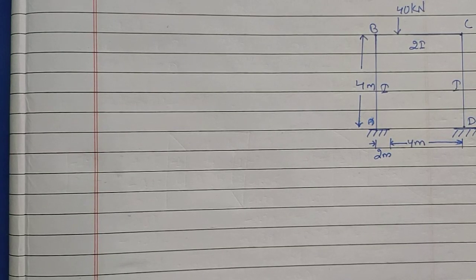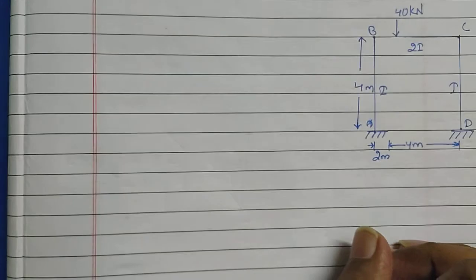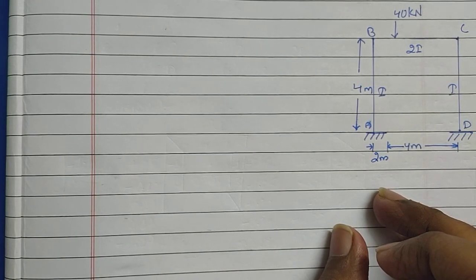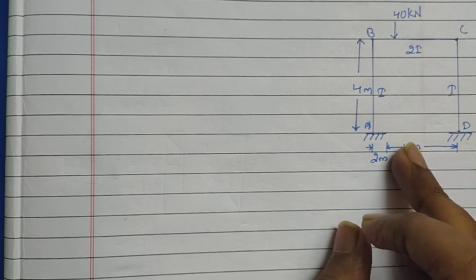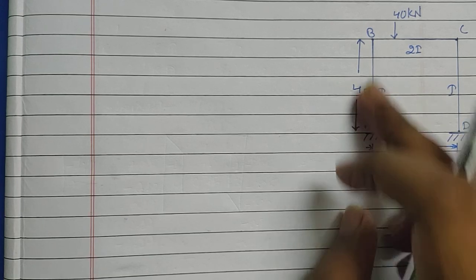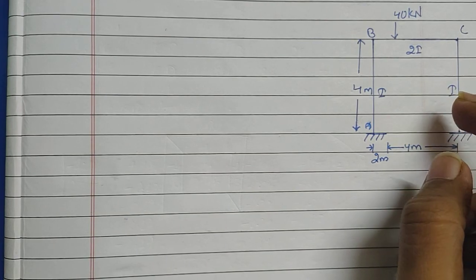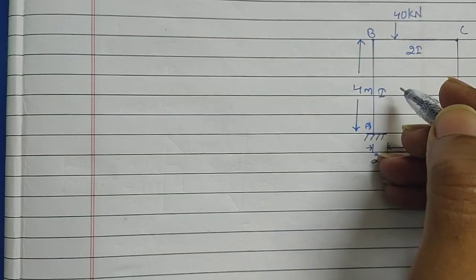Hello everyone, welcome to my YouTube channel Civil Learning. Today in this video I am going to discuss Kani's method, also known as the rotation contribution method. This is going to be the second type of question — a portal frame which is asymmetrically loaded and has non-uniform flexural rigidity. Our very first step is to find the fixed end moment, and the formulas are mentioned in the previous beam-based question, with the link in the description.